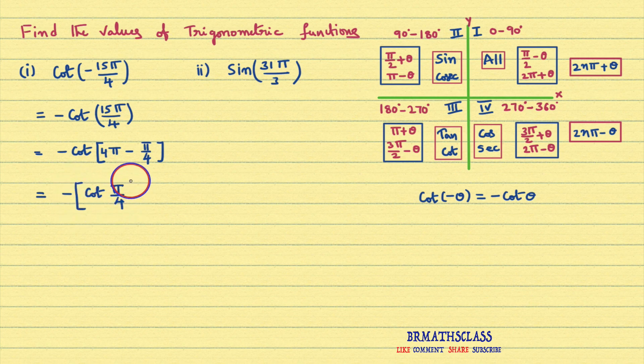Now it's time to write the sign in front of it. Here an even number is there. 4 is an even number. Even number times π minus theta. Look here, 2n represents even number. Even number times π minus theta lies in fourth quadrant. In fourth quadrant cos and secant are positive. What about cot in fourth quadrant? In fourth quadrant cot is negative. So cot of 4π minus π by 4 is minus cot π by 4.